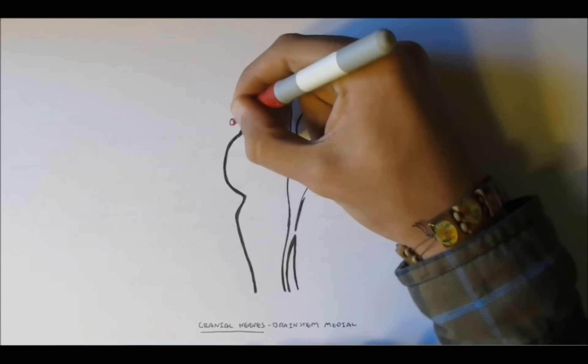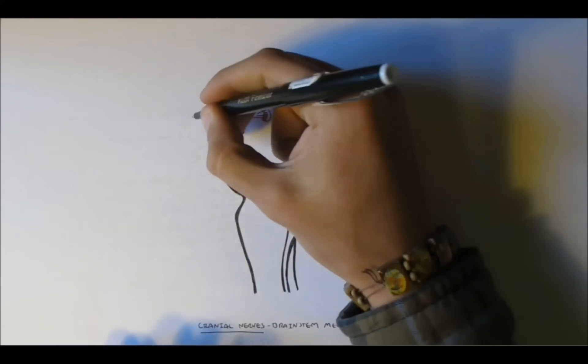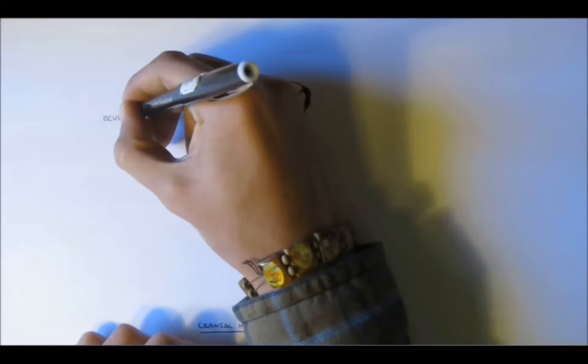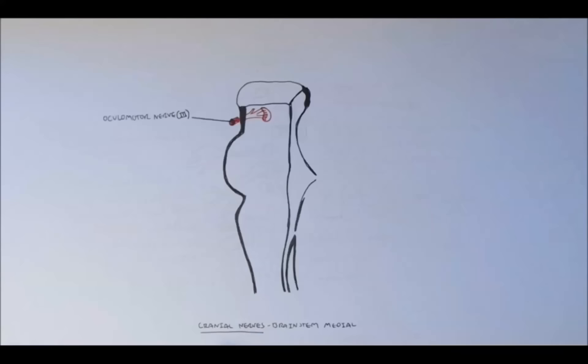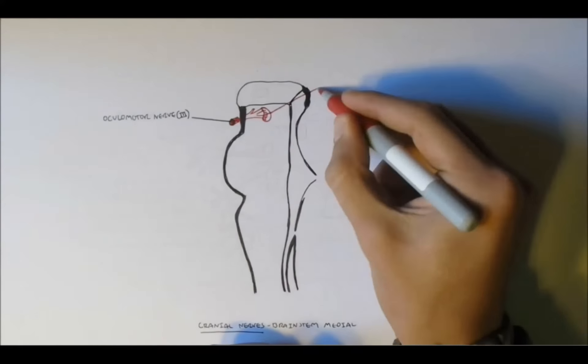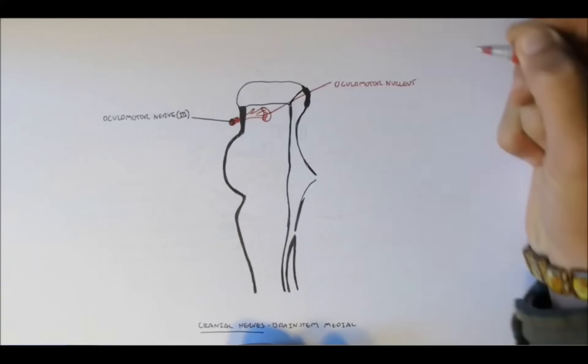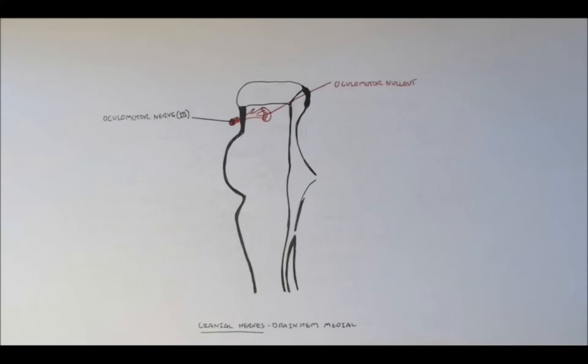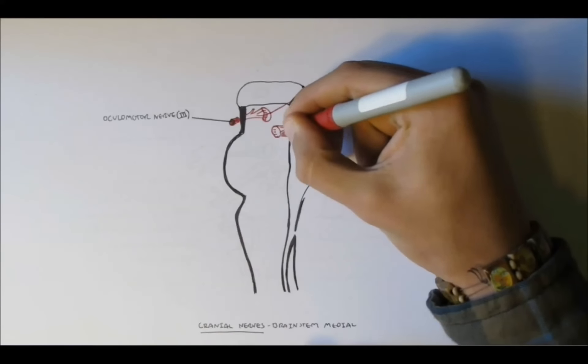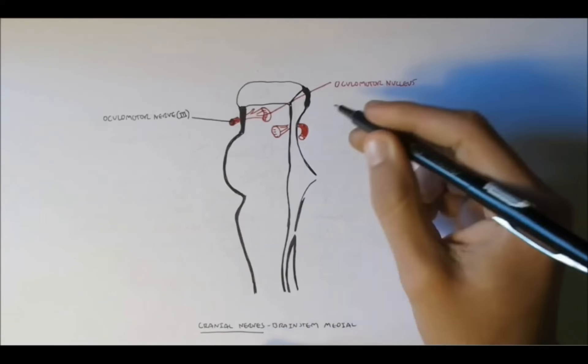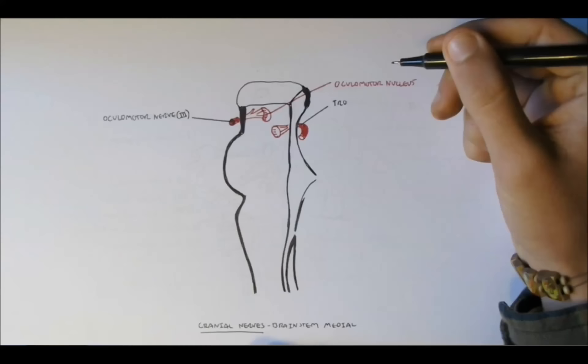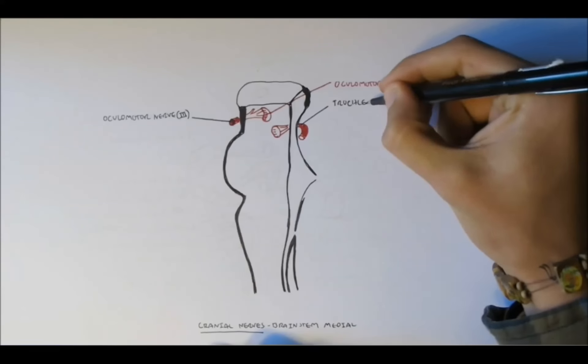And remember, the first two cranial nerves arise from the cerebrum, so we won't talk about it in the brain stem. We'll start with nerve 3, the oculomotor nerve. And this red bulge is actually the oculomotor nucleus. Now, every cranial nerve has a nucleus where the sensory and motor information actually goes through the nucleus first.